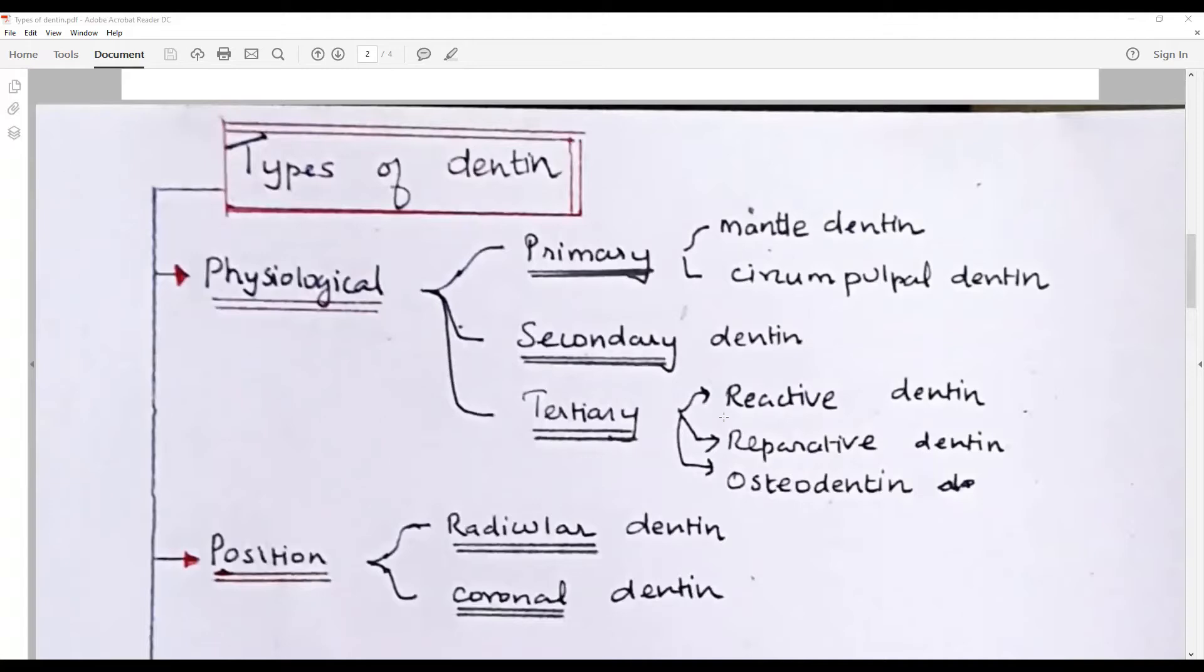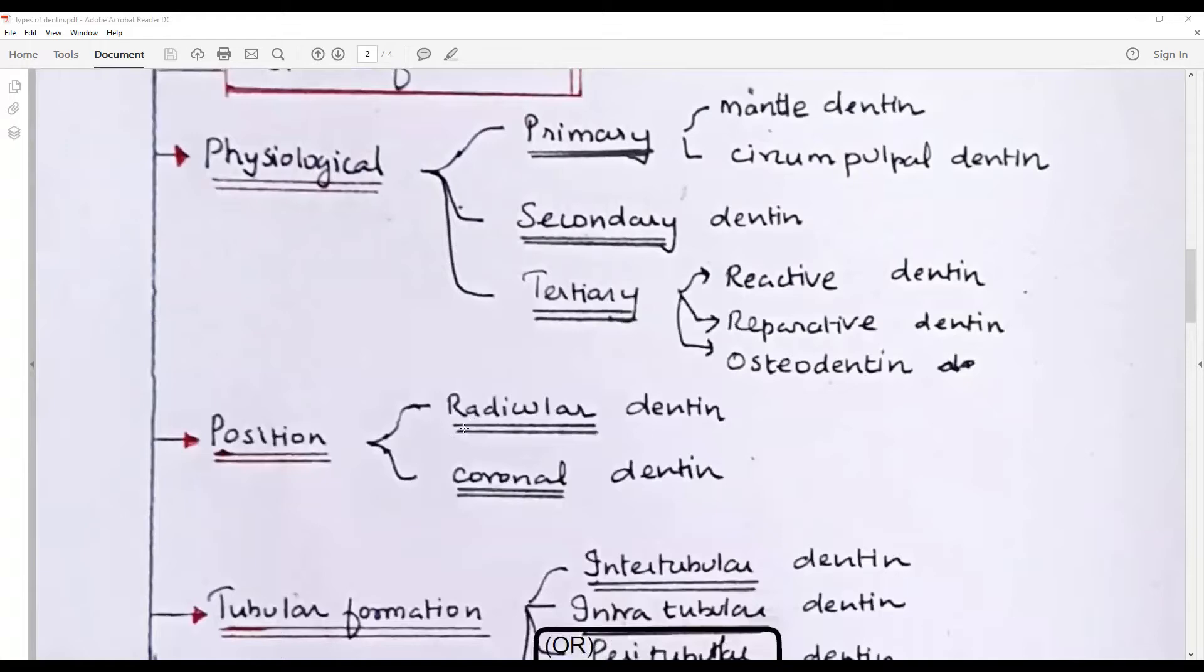By position, it could be radicular dentin in the root, coronal dentin in the crown.